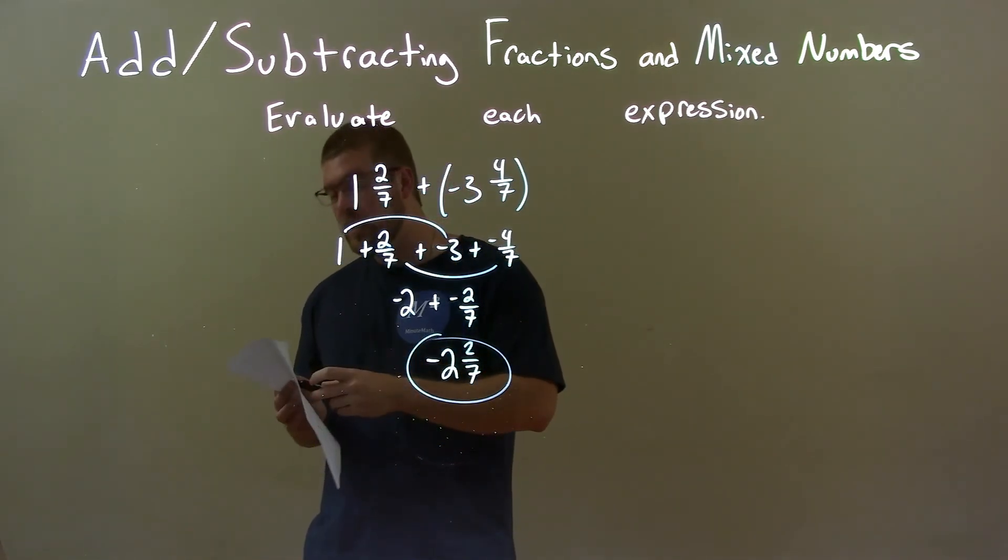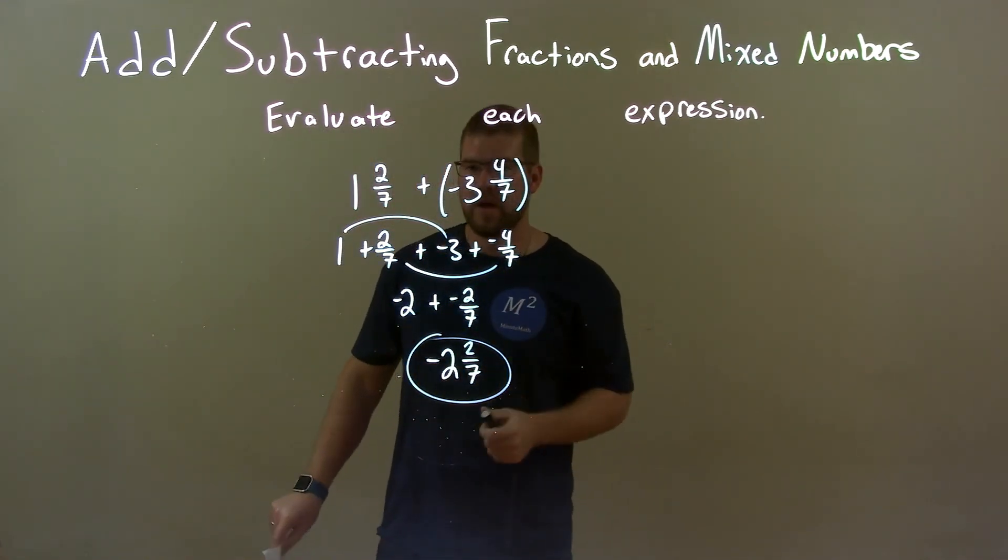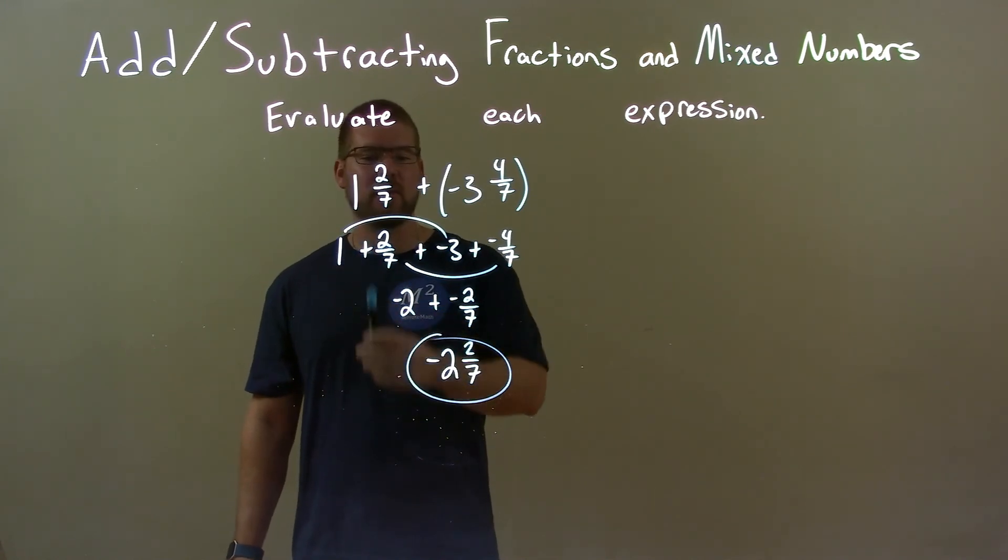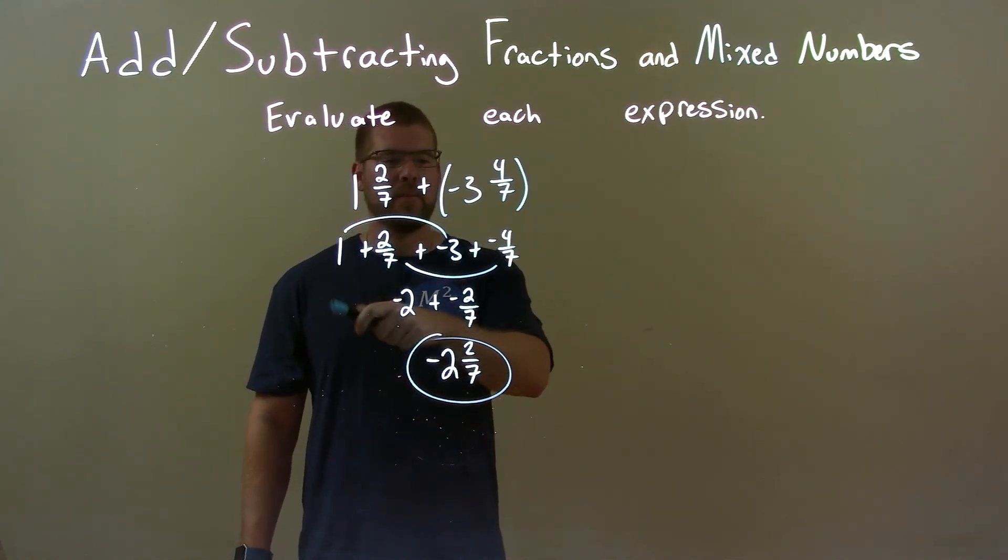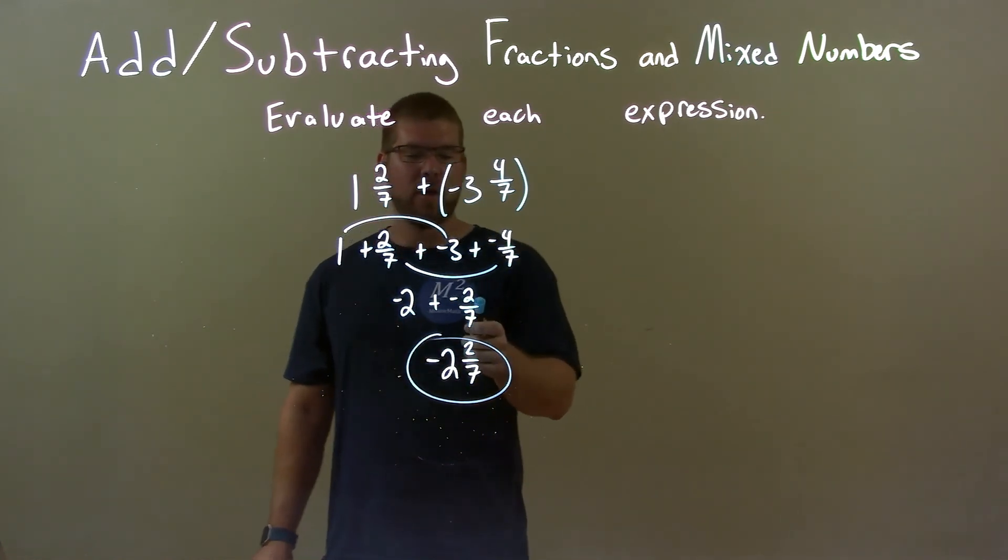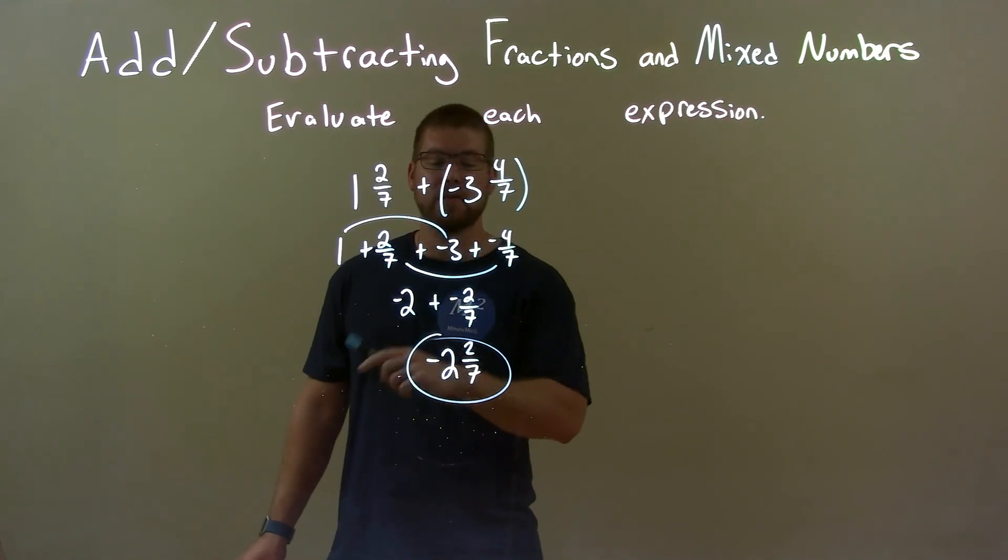So, quick recap. We're given 1 and 2 sevenths plus a negative 3 and 4 sevenths. I broke this out to be whole numbers and proper fractions, and then we combined our whole numbers and our proper fractions. Then, from there, we just combined the two numbers to make them as one, so our final answer was negative 2 and 2 sevenths.